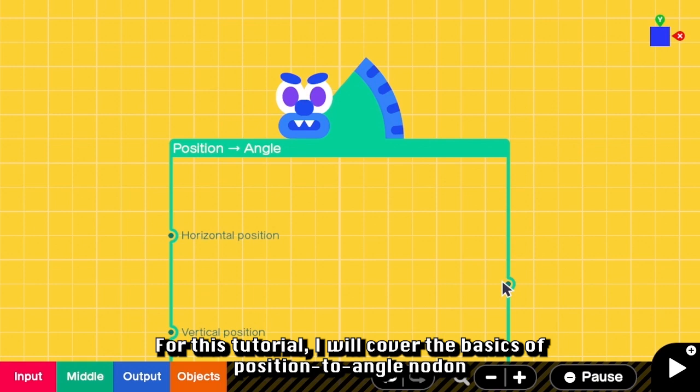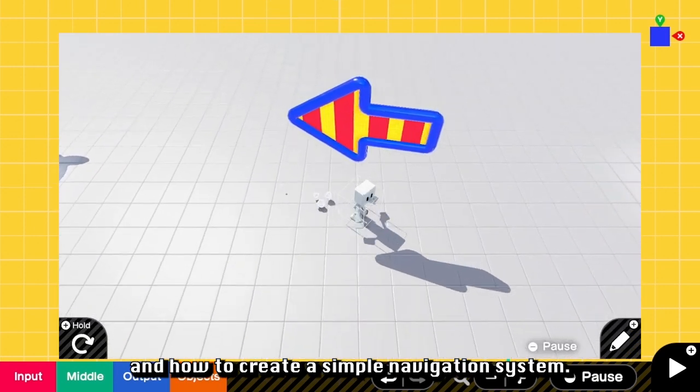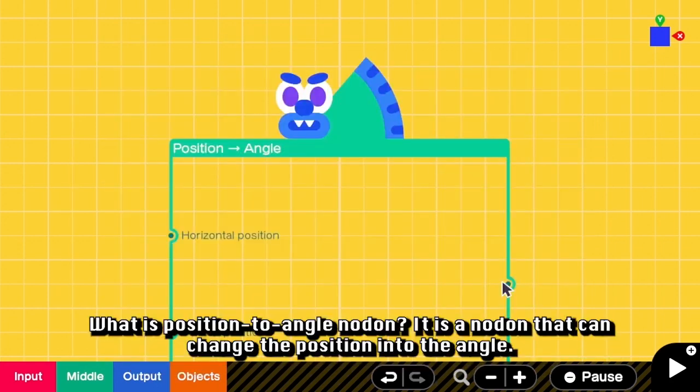For this tutorial, I will cover the basics of position to anchor Nodon and how to create a simple navigation system. So what is position to anchor Nodon? It is a nodon that can change the position into the anchor.